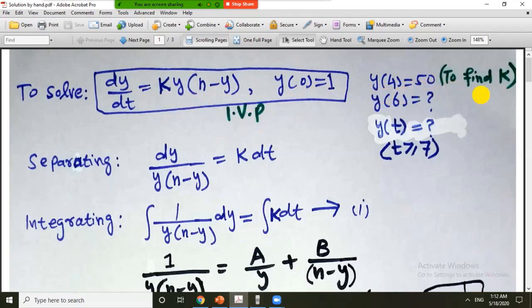This is an extra condition and by using this we have to find k, then y of 6, and y of t for t greater than or equal to 7. So how to solve the separable equation?